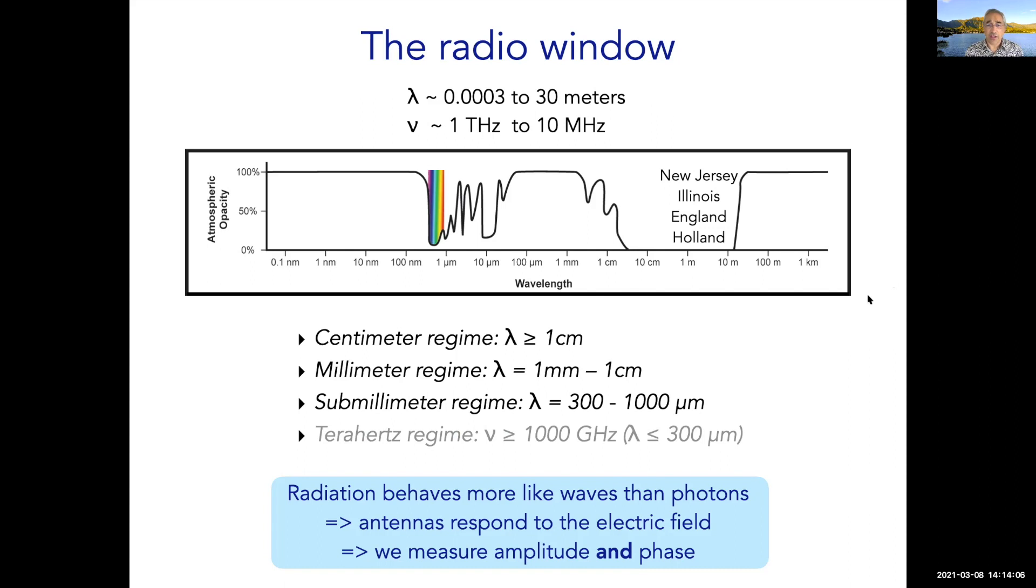The unifying principle behind the techniques we're going to talk about is that in the radio regime, radiation behaves more like waves than photons. We collect the radiation by amplifying the electric currents that it induces in antennas. The advantage is that we can measure amplitude and phase. This is critical for carrying out interferometry.